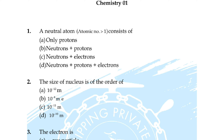Question number 12: which of the following species does not exist under normal conditions? Correct answer is option D. Question 13: a thermos flask is an example of — option A: open system, B: isolated system, C: closed system, D: none of these. Correct answer is option B: isolated system.